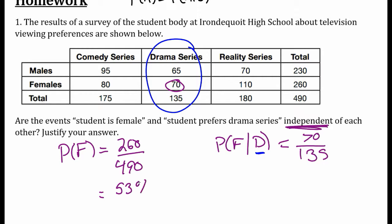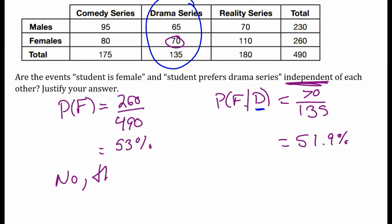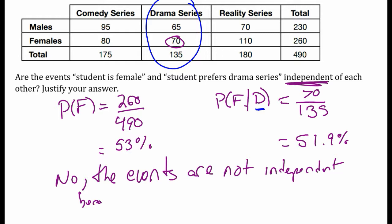Typing this into my calculator, I get 53% for the probability of picking a female, and 70 out of 135 gives me about 51.9%. So are these events independent of each other? Did knowing they like drama series affect the probability of picking a female? Yes, it did. The events are not independent because the probability of female does not equal the probability of female given drama.